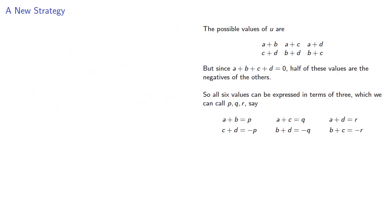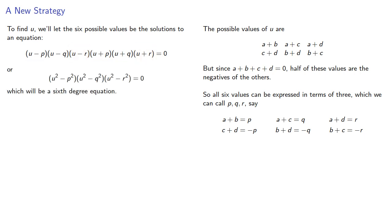To find u, we'll let the six possible values be the solutions to an equation. And because our solutions occur in pairs, we can multiply the pairs together to get a sixth degree equation. But notice that the constant term will be negative p squared, q squared, r squared. And since this is negative, it follows there is a real value u that solves the equation.